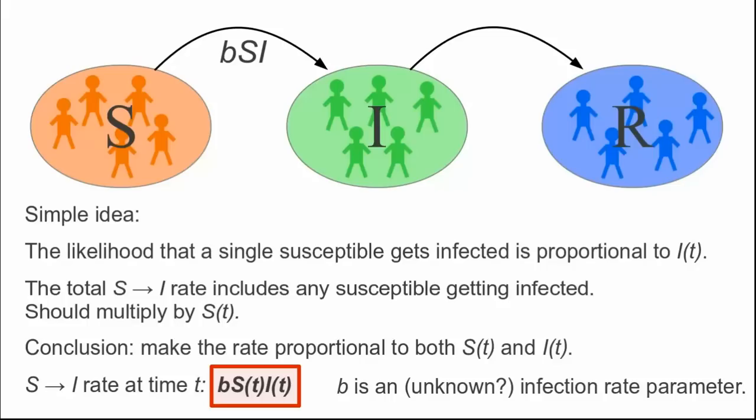Let's label the S to I arrow by B S I to remind us that this combination is how we'll model the infection rate. In this case, I suppressed the arguments t just to make the result look prettier.